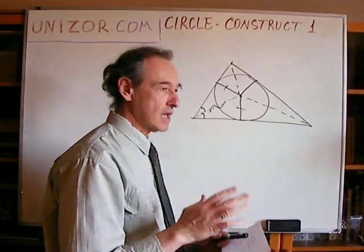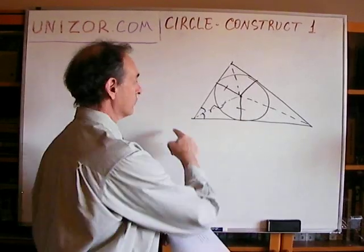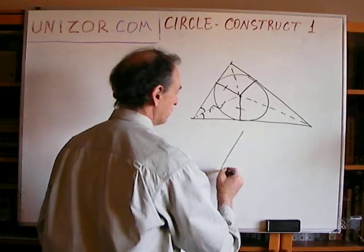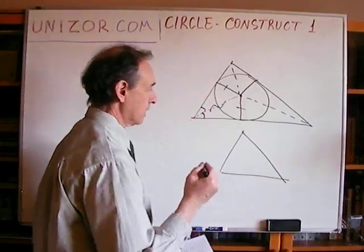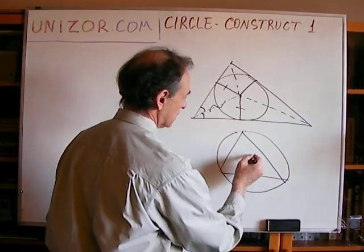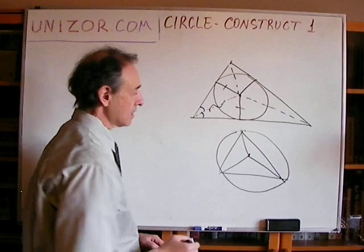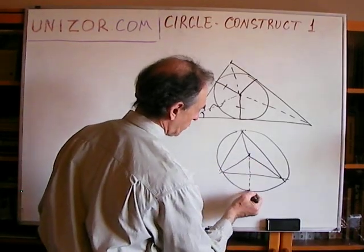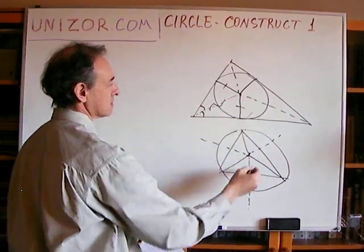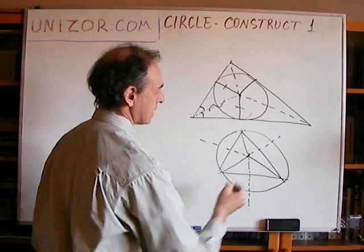If you have a triangle and want to inscribe a circle into it, you use angle bisectors. If you want to circumscribe a circle around a triangle — which we did before — the center of the circumscribed circle must be equally distant from all three vertices, which means it must lie on the perpendicular bisector of each side. So: inscribed circle uses angle bisectors, circumscribed circle is at the crossing of perpendicular bisectors of all sides.